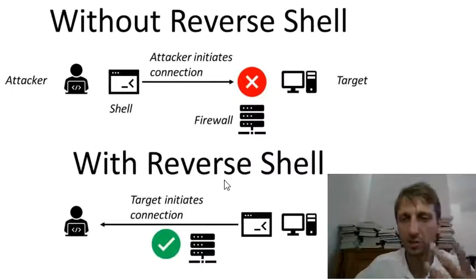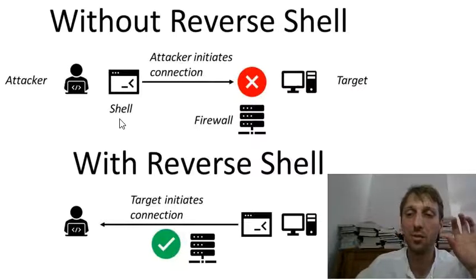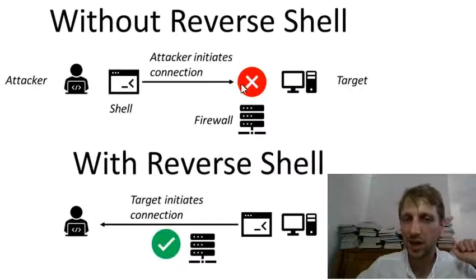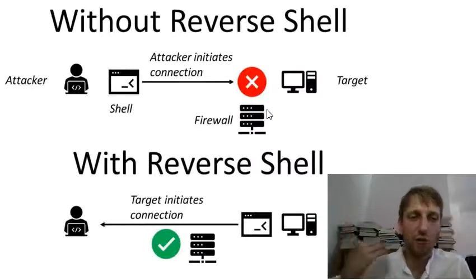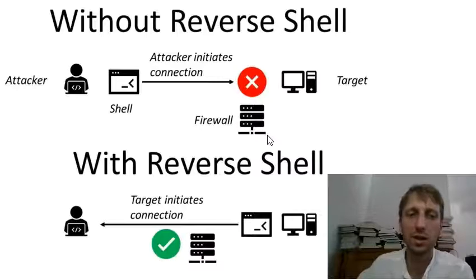Here is the scenario. I have created this small diagram to show how it works. You have an attacker here. The conventional approach by an attacker — and there is nothing conventional about hacking, but you know what I mean — is that he opens up a shell and initiates the connection to the target machine. But incoming connections are often blocked, because hackers from all over the world constantly try to force their way into your machine. So if there is a firewall on your computer, or often firewall gateways in the network itself, those will usually block these incoming connections.